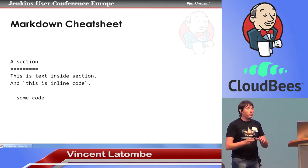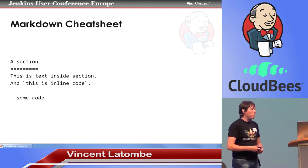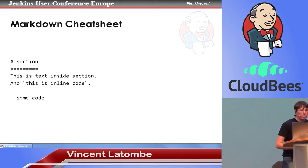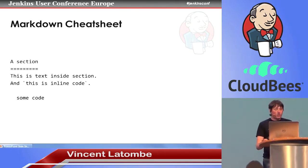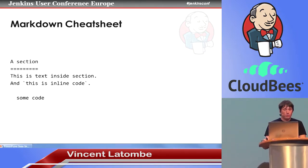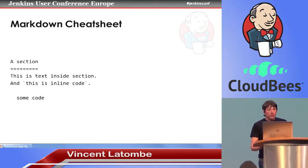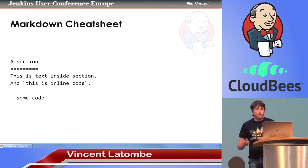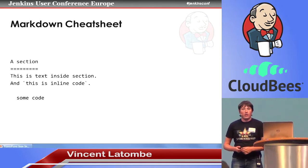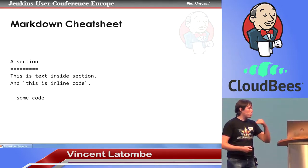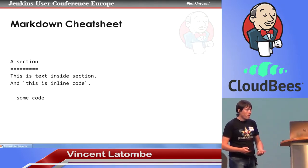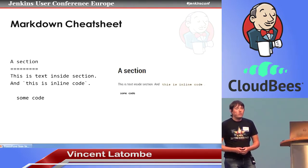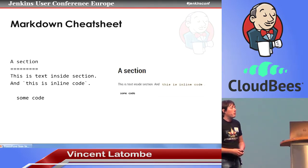For those not comfortable with Markdown — which is typically used to write readmes — in Markdown you have a section name followed by a line filled with equal signs or dashes. You can put raw text, have inline code between backticks, and have a block of code by putting an empty line followed by a line beginning with four space characters. You get the graphical rendering on the side.